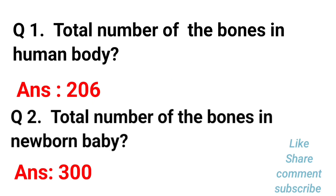First question: What is the total number of bones in the human body? The answer is 206. The total number of bones in a newborn baby is 300.